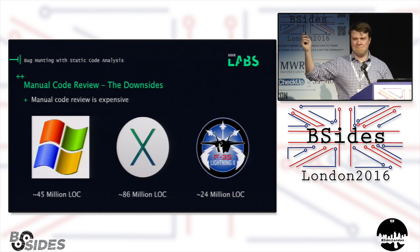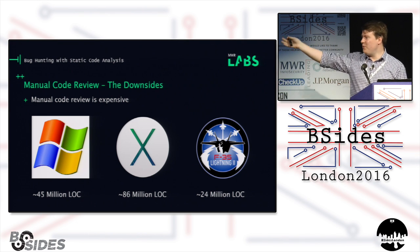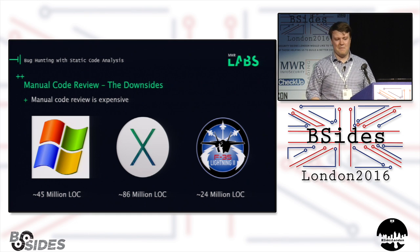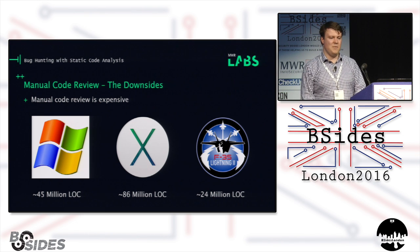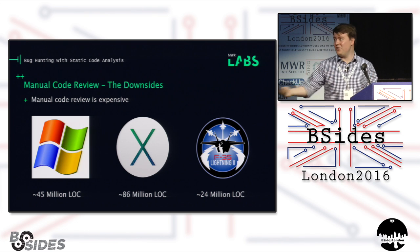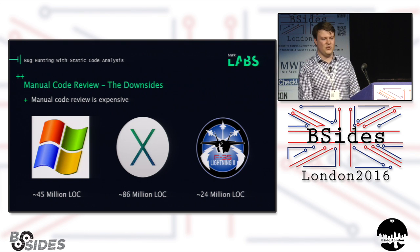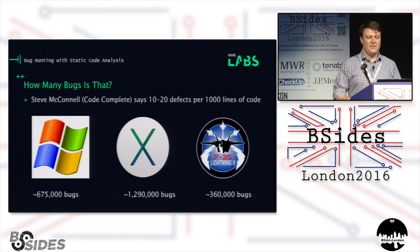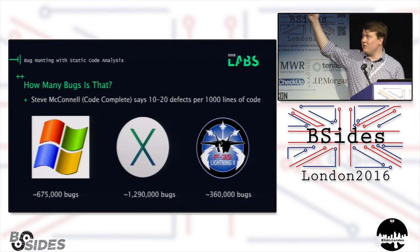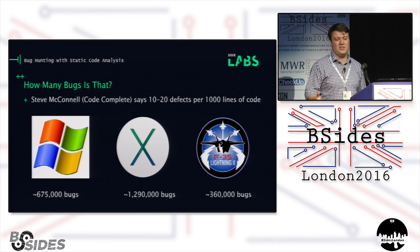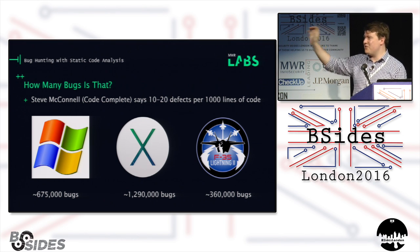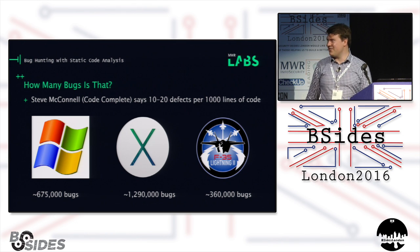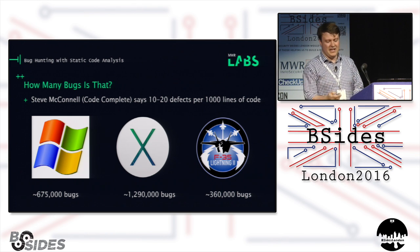Your problem then becomes: it's really expensive doing this on large code bases. Latest estimates put Windows at about 45 million lines of code, Mac at 86 million lines of code, and the new F-35 at about 24 million lines overall. Paying a security consultancy to read through 86 million lines of code is a really expensive way of doing it. Steve McConnell, who wrote Code Complete, estimates 10 to 20 defects per thousand lines of code. That means Windows has around 600,000–700,000 bugs, Mac OS X about 1.3 million, and our new fighter jet somewhere between 300,000 and 400,000. That's a lot of bugs.